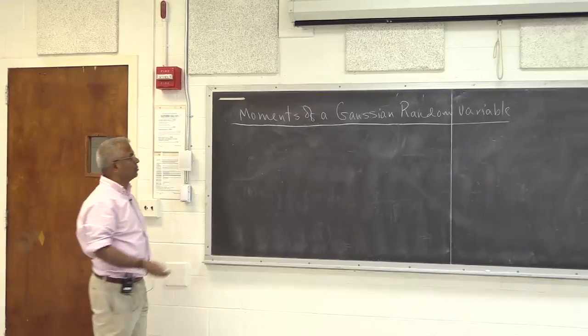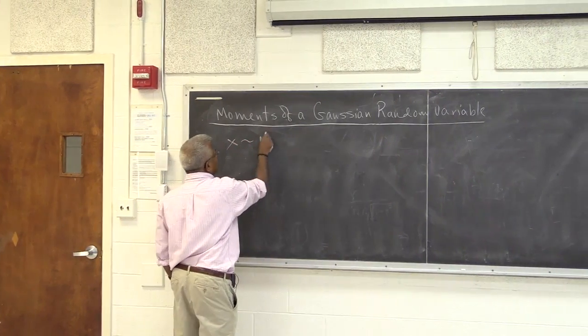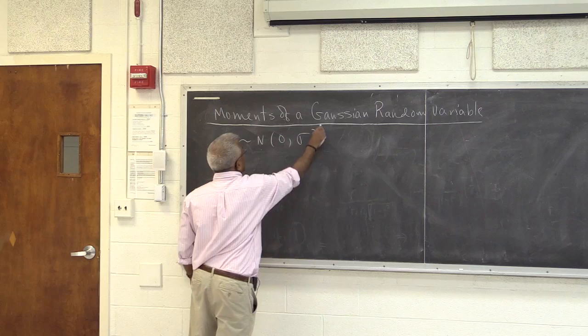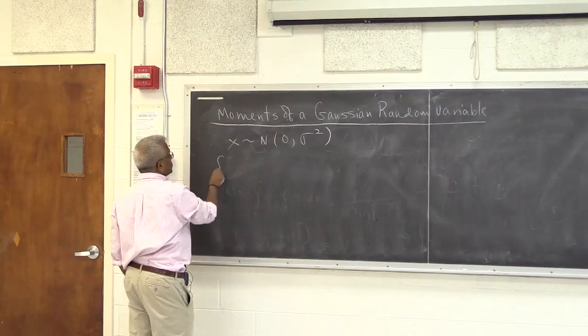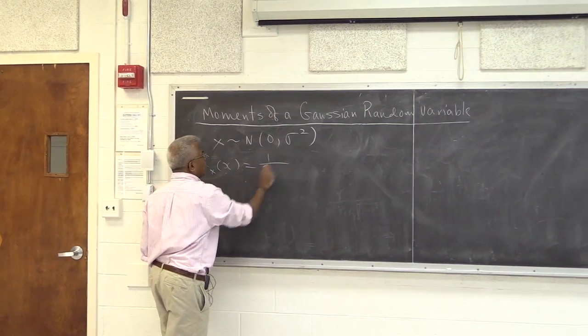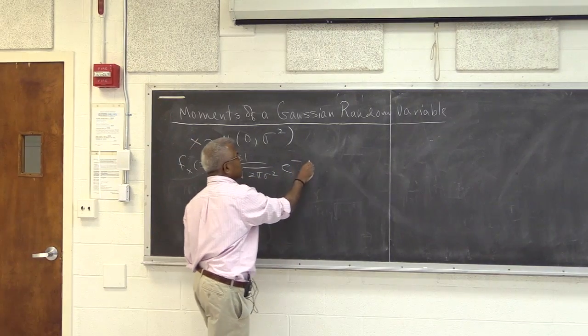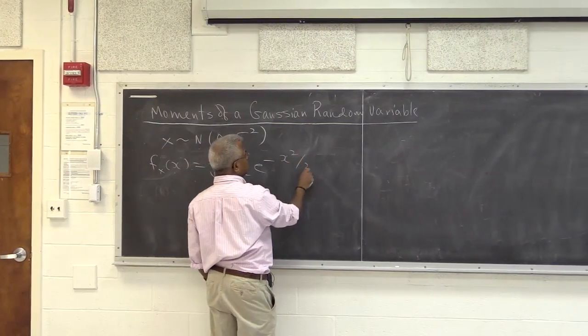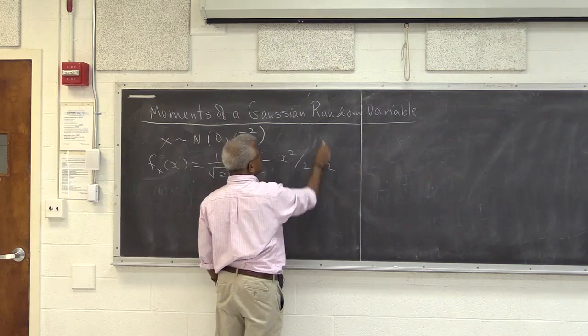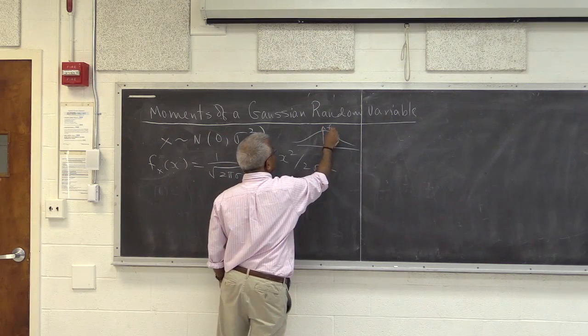Let's look at how to compute the moments of a Gaussian random variable. I'll start with a zero-mean Gaussian random variable. The density function of x looks like 1 over square root of 2 pi sigma squared, e raised to minus x squared over 2 sigma squared. This is a bell-shaped curve, so this is f_X(x).